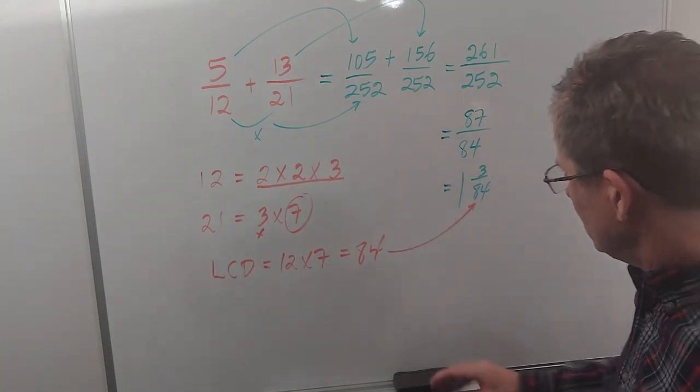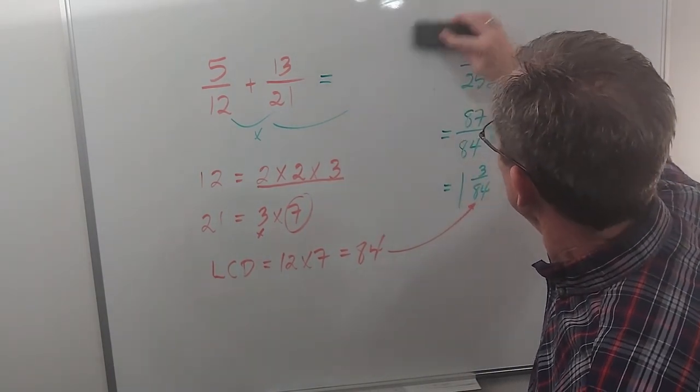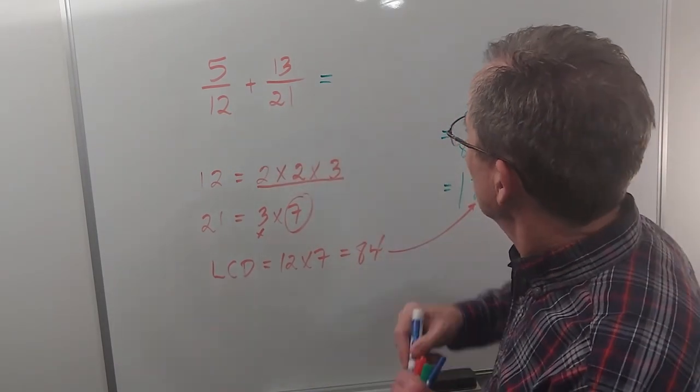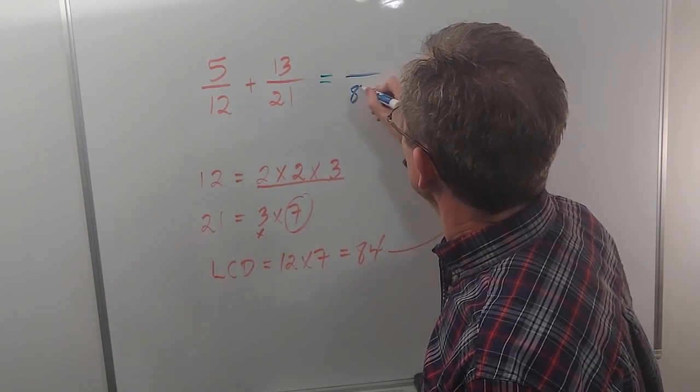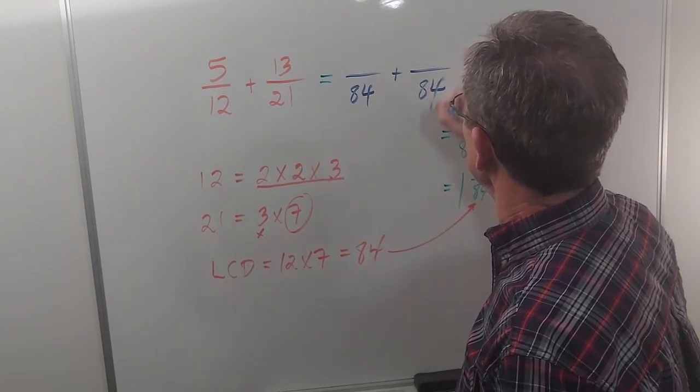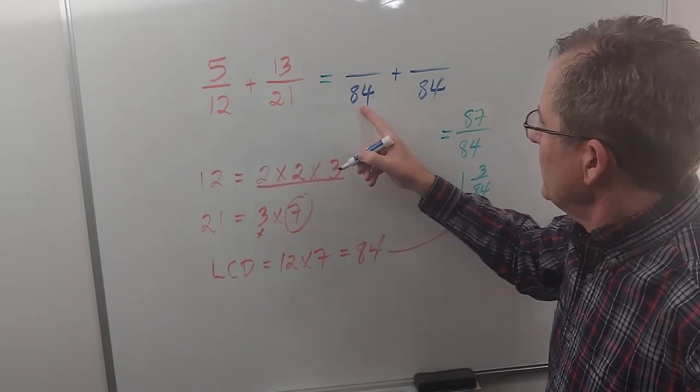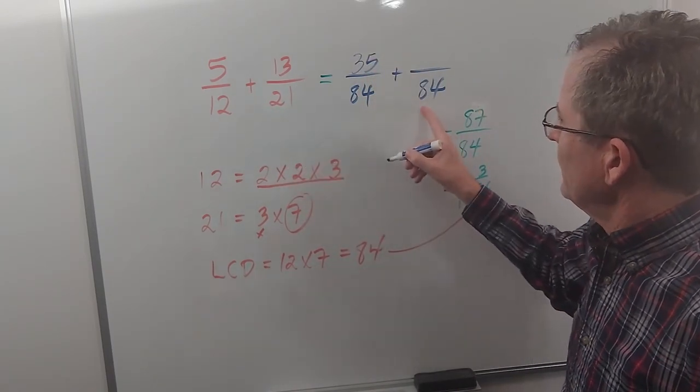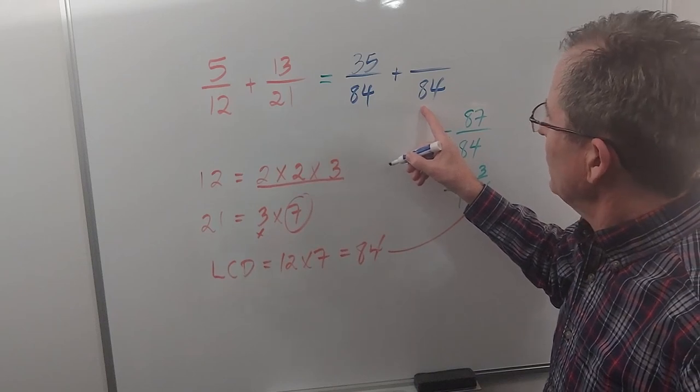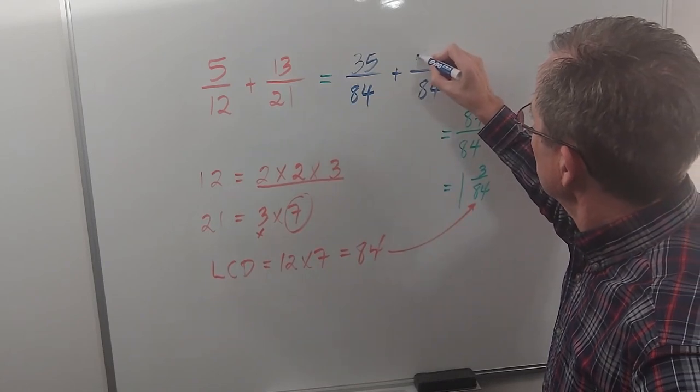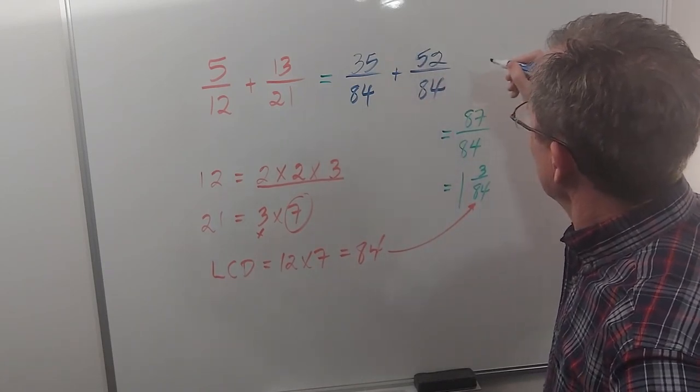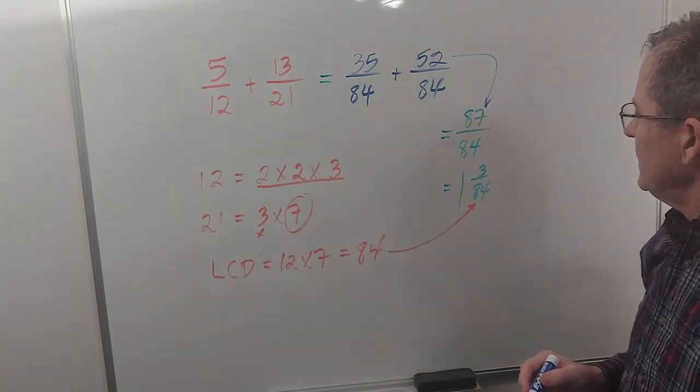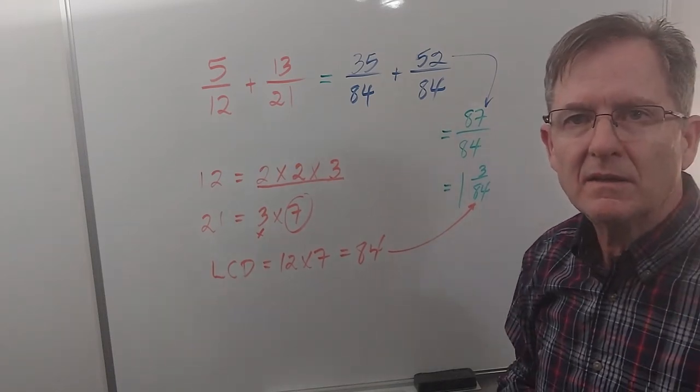So let's redo the question using 84 as our common denominator. And if you want, you can write it as two separate fractions; I'll do that even though I prefer just to write it as one fraction. So to go from 12 to 84, I have to multiply by 7, so 5 times 7 is 35. To go from 21 to 84, I have to multiply by 4. 13 times 4 is 52. Now if I add 35 and 52, sure enough, 87. So 1 and 3/84 is again the answer.